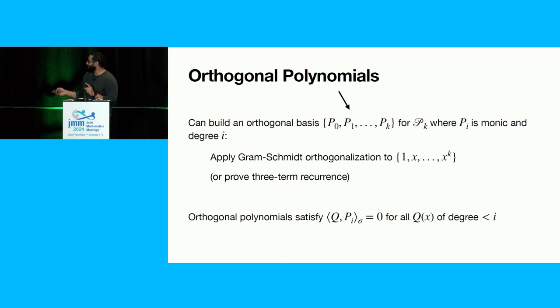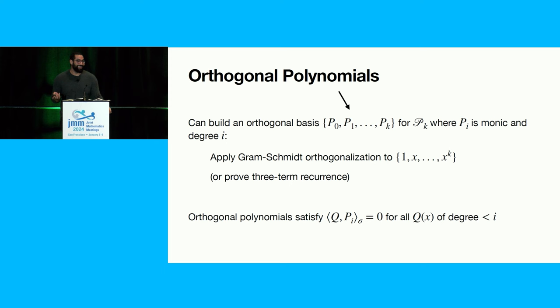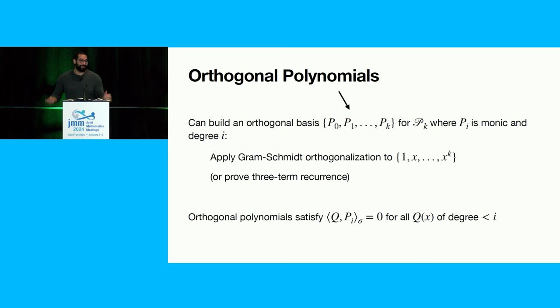You can build this basis in a slightly slicker way by proving that if you want to do Gram-Schmidt on this sequence, you actually only need to orthogonalize to your previous two polynomials, not all previous ones. This takes a little work to see and is not the most obvious thing. I've given this talk twice before, and I learned that this three-term recurrence question was actually a qualifying exam question for the Harvard analysis qual. So I'll allow myself to skip the details here.